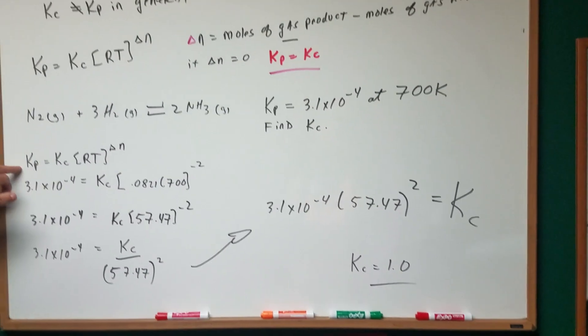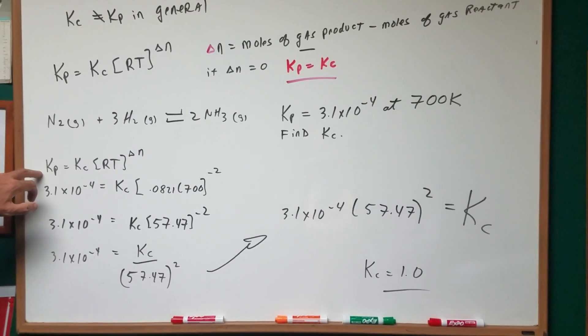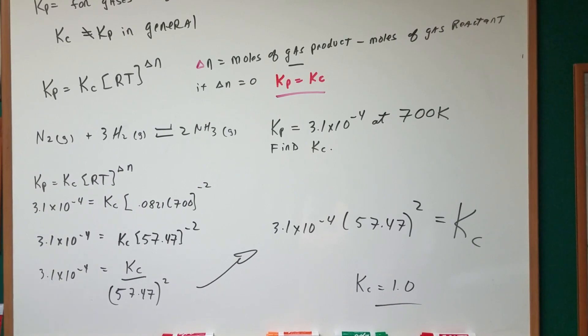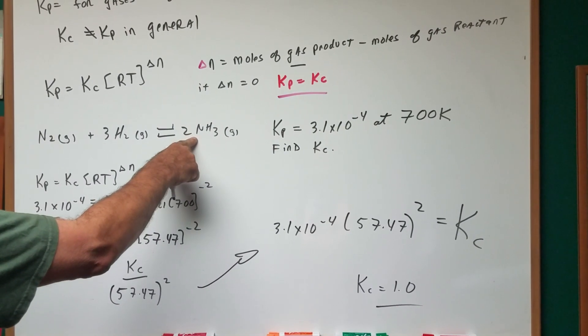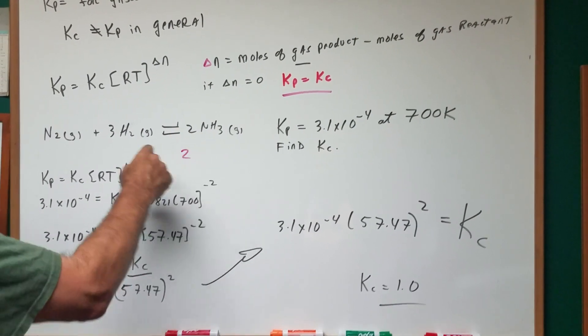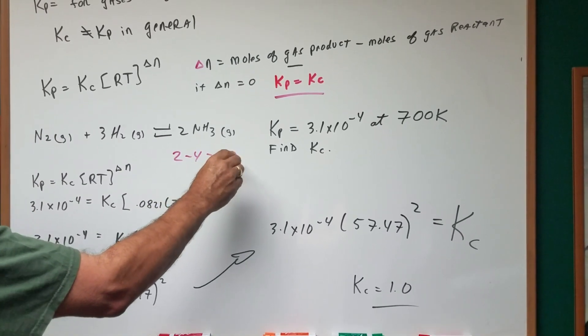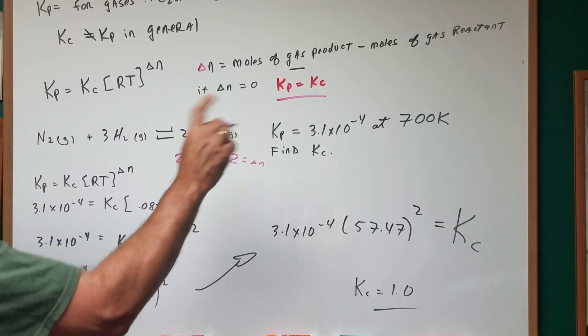Well, there's my formula. The KP is the KC RT delta N. Let's get the delta N first. Well, you have the products, which is two. Three and one is four. So we're going to get the delta N is equal to minus two.